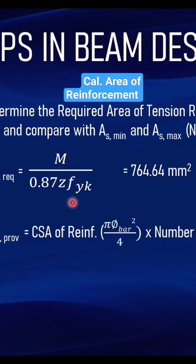The formula for providing reinforcement for a beam equals the cross-sectional area of reinforcement, which is pi times diameter of bar squared over 4, multiplied by the number of reinforcement bars you want to have.